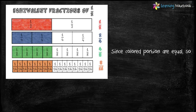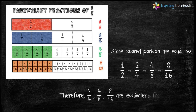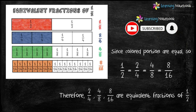Since the colored portions are equal, we can say 1 by 2 equals 2 by 4 equals 4 by 8 equals 8 by 16. Therefore, 2 by 4, 4 by 8, and 8 by 16 are equivalent fractions of 1 by 2. In the same way, you can perform this activity and find the equivalent fractions of 1 by 3 and 3 by 4. See you in the next video.